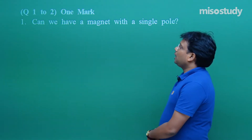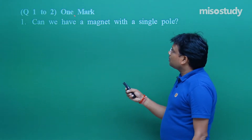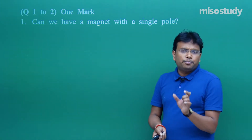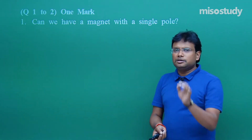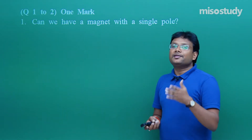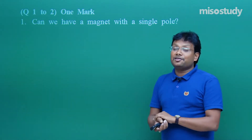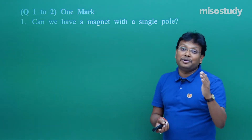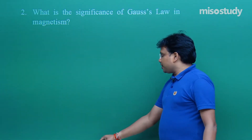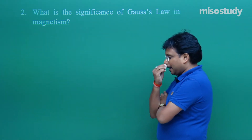Now we move on to question number 2, again for one mark. For one mark, be very careful — sometimes even a single word will earn you that mark, though sometimes you may need to write one complete line. The question is: what is the significance of Gauss law in magnetism?